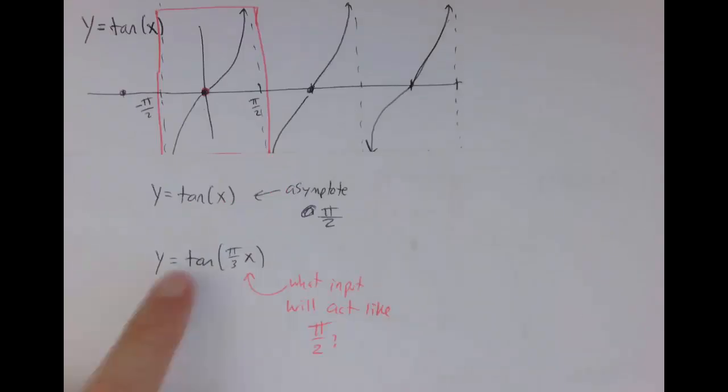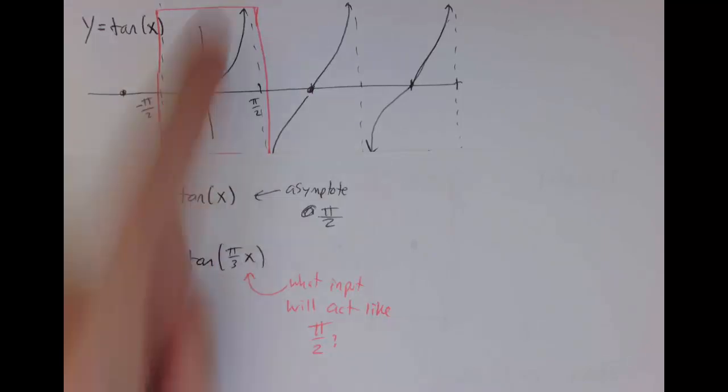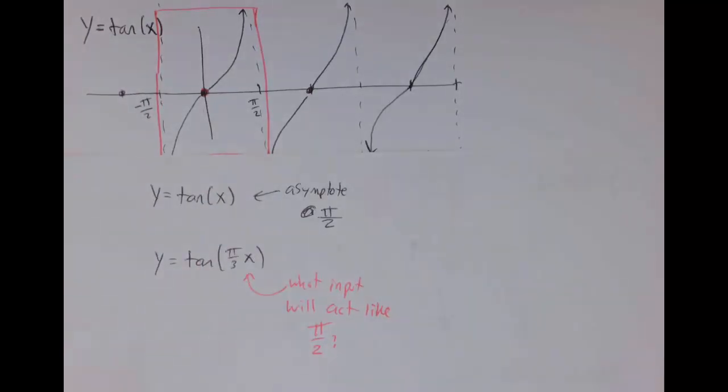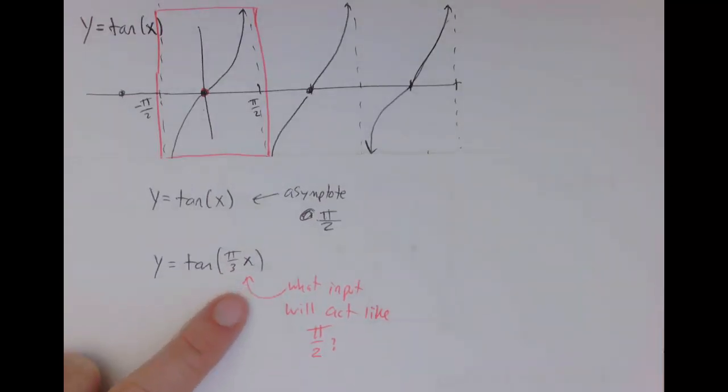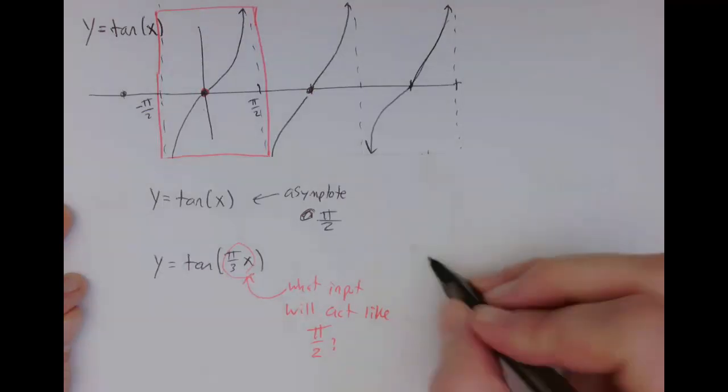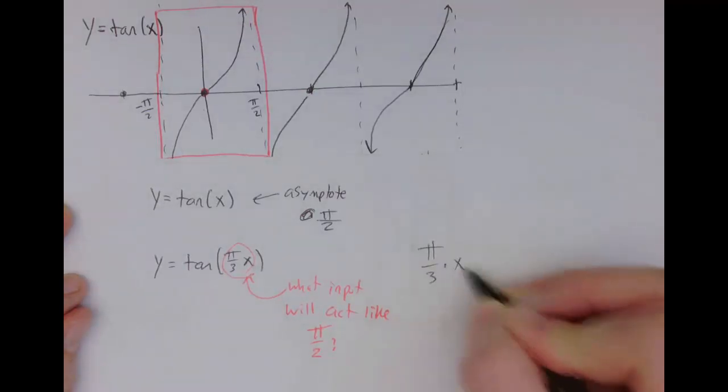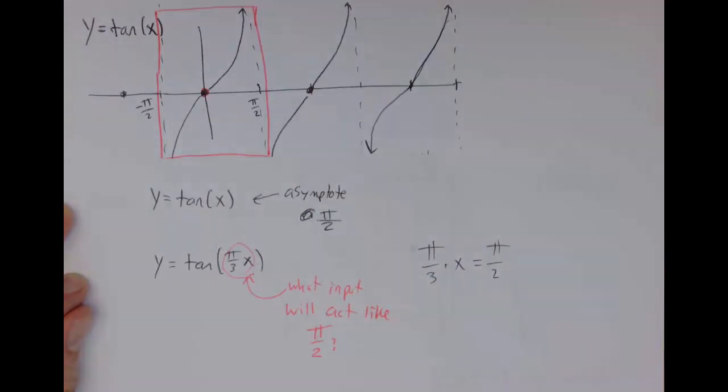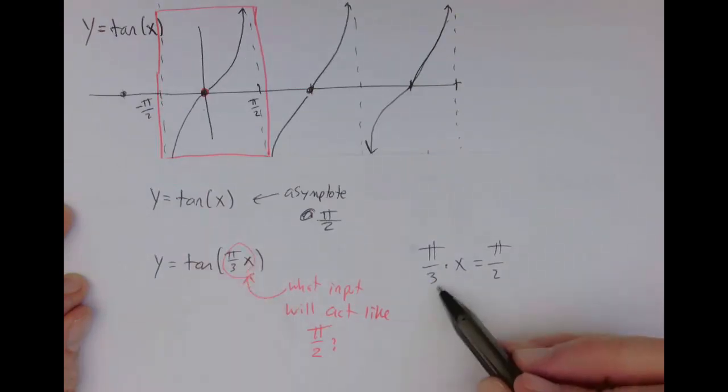So similarly, we've got that for our parent function, a special feature is happening when the input is π/2. So when we're considering our transformation, we want to ask what input is going to act like π/2. Or in other words, what input can we give where when we evaluate it, it's going to result in π/2. Because that's the input where our interesting feature is going to show up. So you can either do this in your head, or you could write it algebraically. I'm saying what x value gives me π/2 when I multiply it like this. So I could say π/3 times my x value needs to give me π/2. And then just solve for the x value that makes that true.